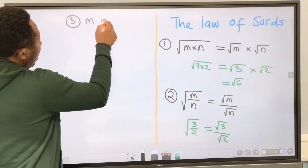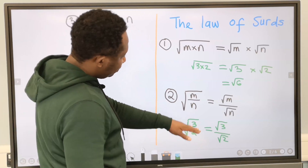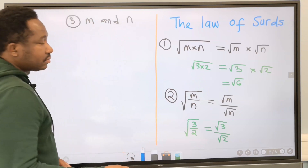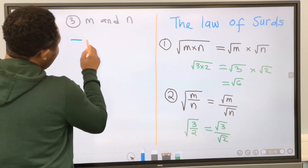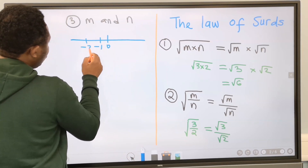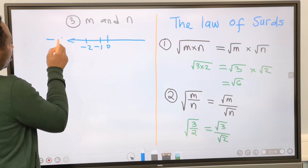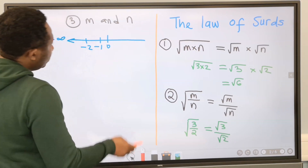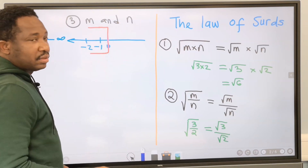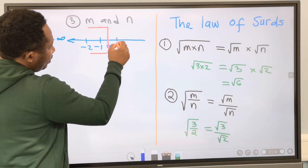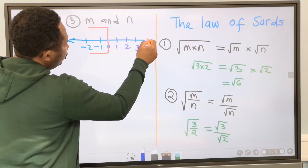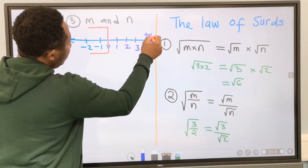Number three: m and n in the square root must be positive integers. That is, any m and n you are going to use in surds must not go towards negative values or zero. Anything in that direction is not allowed. M and n must be 1, 2, 3, and continue to positive infinity.